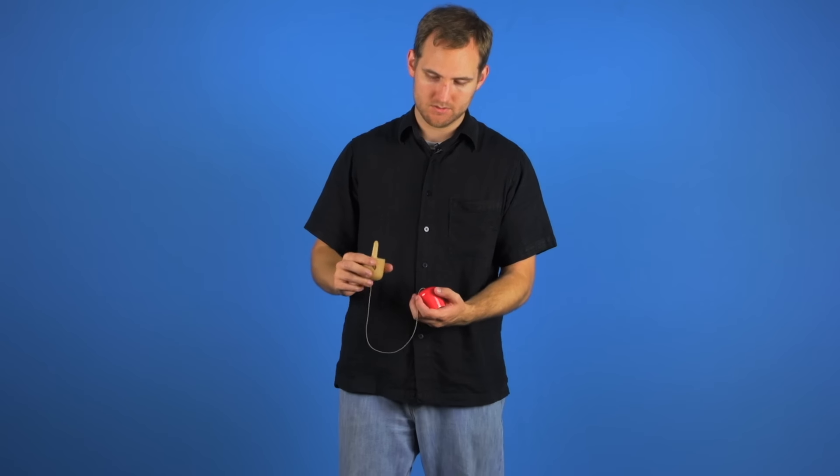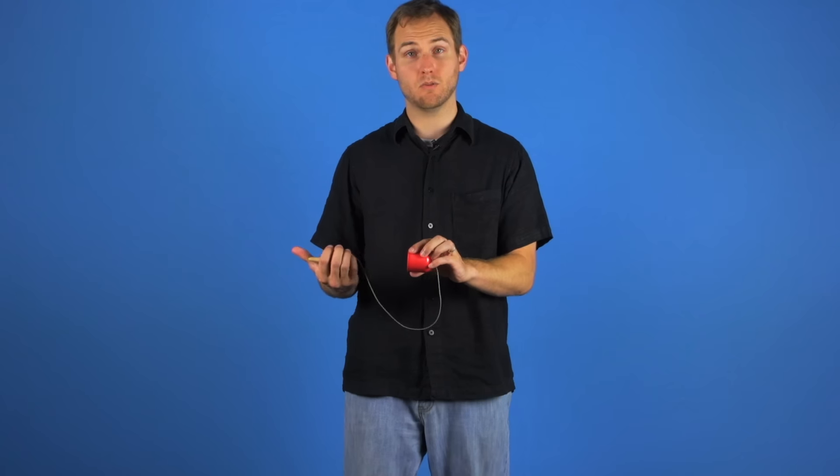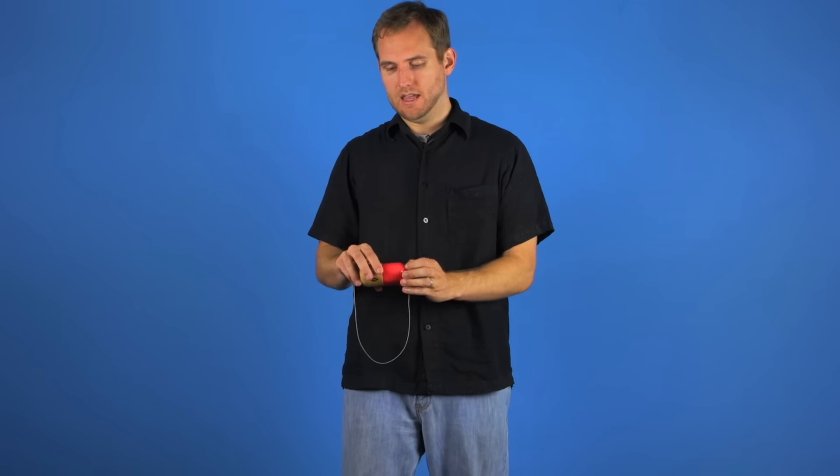When you pull up, you want the cap to come to about the level of your hand and rotate three quarters of a turn so that the hole ends up facing outward. Then from here you're just going to spike it.